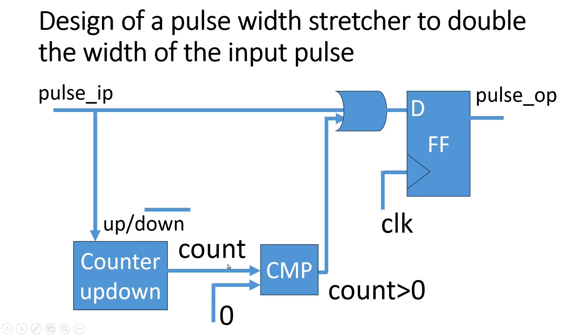And friend, this count is applied to this comparator. Other input is 0 only. Whenever count is greater than 0, we will get 1 at its output. Output of this comparator will go high. And its output is applied to one of the input of this OR gate. And when this value is high, irrespective of the pulse input, it will reach at the input of D flip-flop and finally it will be passed to Pulse output.